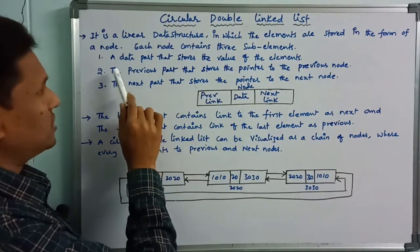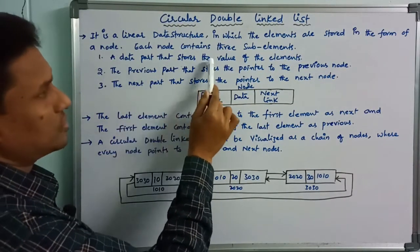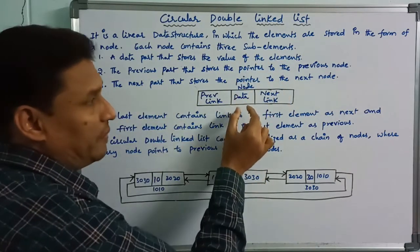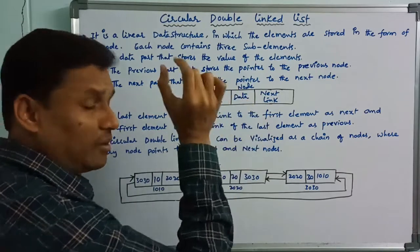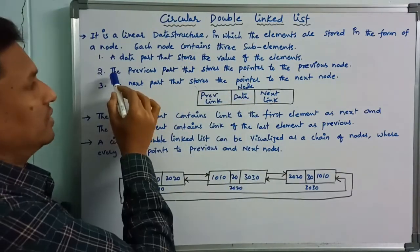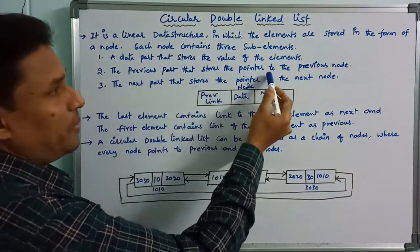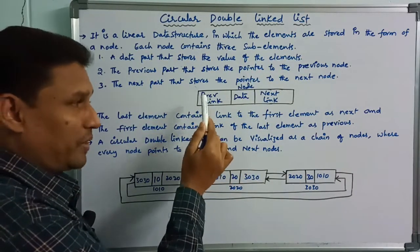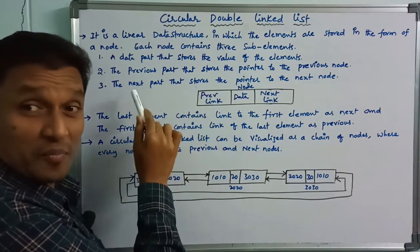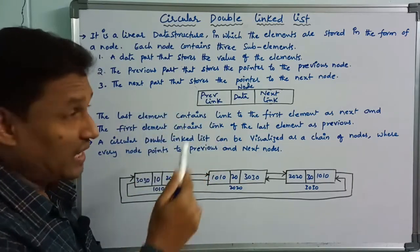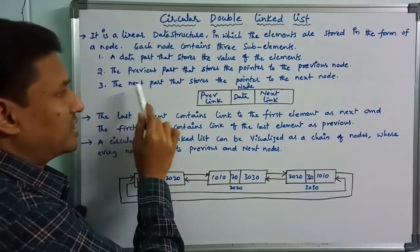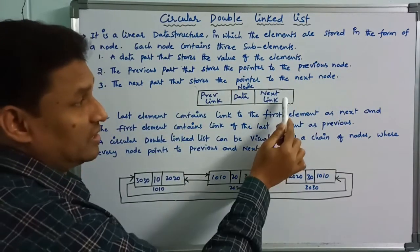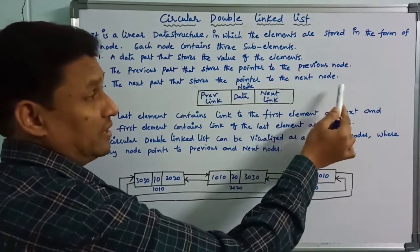The first part is a data part that stores the value of the element — this is the actual value. The second part is the previous part, which stores the pointer to the previous node. The third part is the next part, which stores the pointer to the next node.